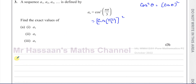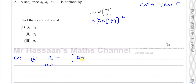For part A, part 1, we've got to find A1. A1 is the value you get from the expression when you replace N with 1. So we're going to have the cosine of 1 times pi, which is pi over 3, and that has to be squared.